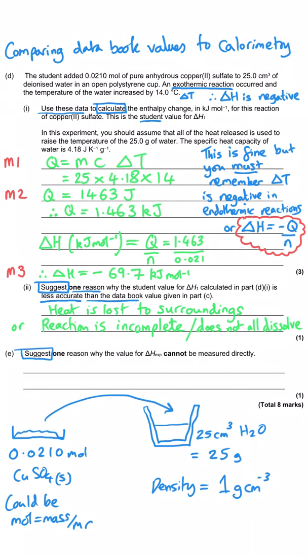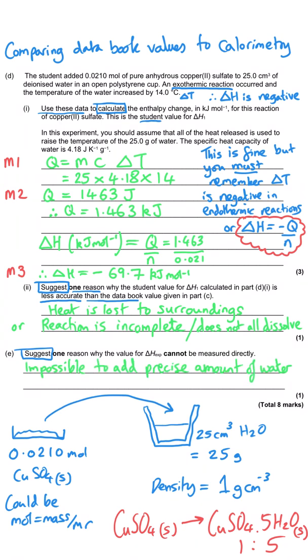The final part asks, suggest one reason why the value for enthalpy change of the experiment cannot be measured directly. I already hinted at that when I annotated the Hess cycle. We've got anhydrous copper sulfate turning into hydrated copper sulfate, which has the formula CuSO4·5H2O. When you are hydrating your copper sulfate, it is absolutely impossible to add precisely the right amount of water so that we end up with five molecules of water for each mole of copper sulfate. There's another way of thinking about this. How do you actually measure the temperature rise of a solid accurately? That's very difficult. And when you're adding your water, how do you stop the solid dissolving? How do you make sure you hydrate it all equally so the solid just becomes hydrated and none of it dissolves? That's unrealistic. You're likely to make some solution during that process.